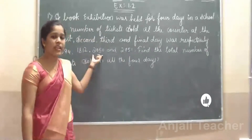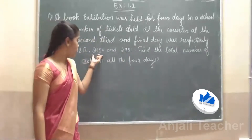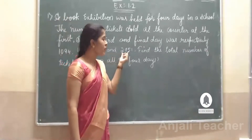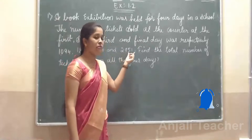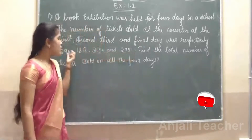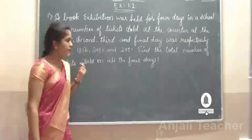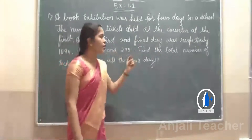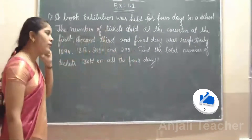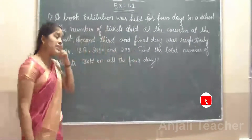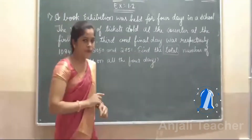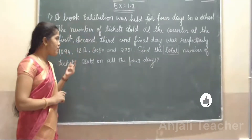Tickets were sold on 4 days: the final day means the 4th day, 20,751. These are the total tickets sold on the respective days. Find the total number of tickets sold on all 4 days. Here, there is a total — we should add, we should plus.